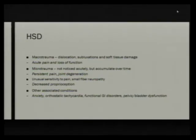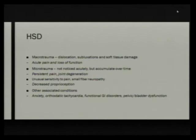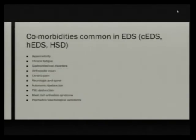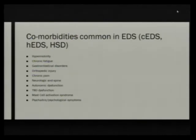Looking at the pathology: macrotraumas are the obvious dislocations and subluxations with acute pain and loss of function. Microtraumas are subtle and accumulate over time, leading to joint destruction and chronic pain. This is thought to be due to decreased proprioception and small fiber neuropathy. Comorbidities associated with most commonly the classic and hypermobile types include hypermobility, chronic fatigue, GI disorders, orthopedic injury, chronic pain, neurologic and spine complications, autonomic dysfunction, TMJ dysfunction, mast cell activation syndrome, and psychiatric symptoms — also occurring in hypermobility spectrum disorders.